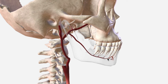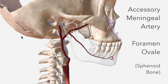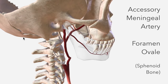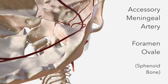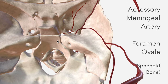Our next branch is the accessory meningeal artery, which passes through the foramen ovale of the sphenoid bone. Looking inside the skull to appreciate that better: the accessory meningeal artery passes through the foramen ovale to supply the trigeminal ganglion.